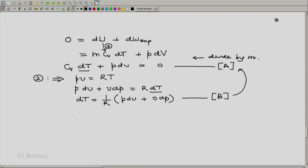The DT part into equation A where here also we have a DT part. We will get the following: CV by R into P dV plus V dP plus P dV is zero. So taking P dV from here and P dV from here together, we will end up with, let me put V dP first.